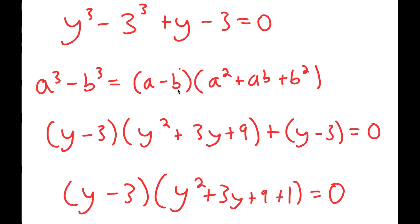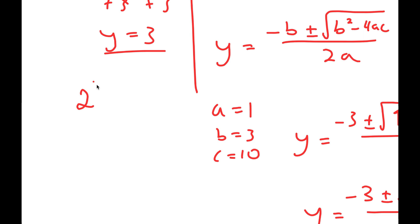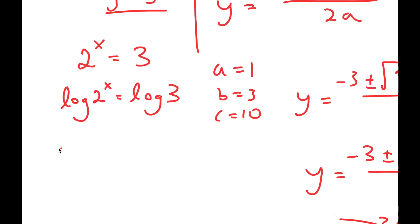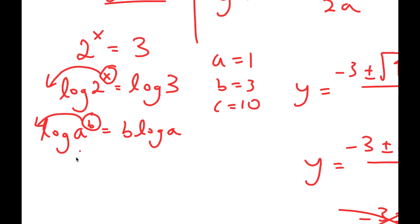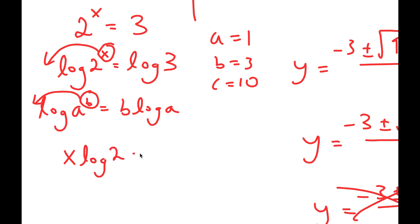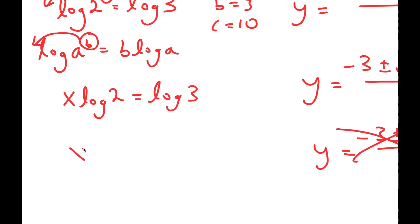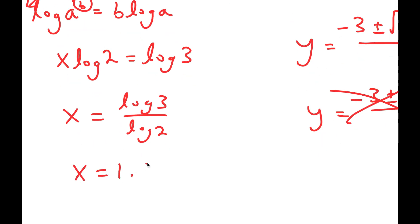Remember how we let 2 to the power of x equal y. So now I get 2 to the power of x is equal to 3. To solve this, I'm going to take the log on both sides, so I have log 2 to the power of x is equal to log of 3. If I have something in the form log a to the power of b, I can move the exponent b to the front to get b times log a. In this case, I have log 2 to the power of x, and I can move x to the front, so this turns into x times log 2 is equal to log 3, which means x is equal to log 3 over log 2, which is equal to 1.585.